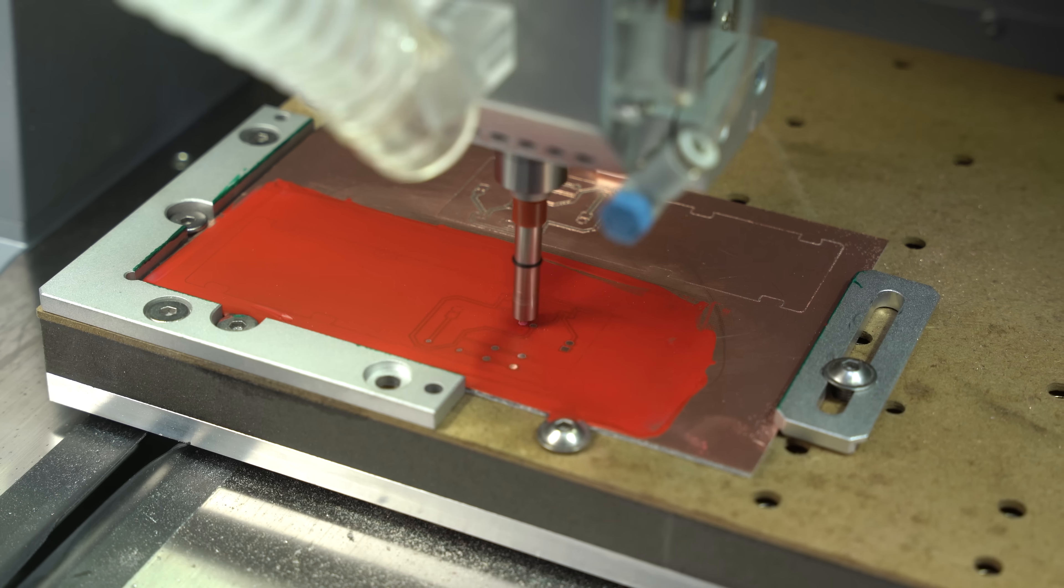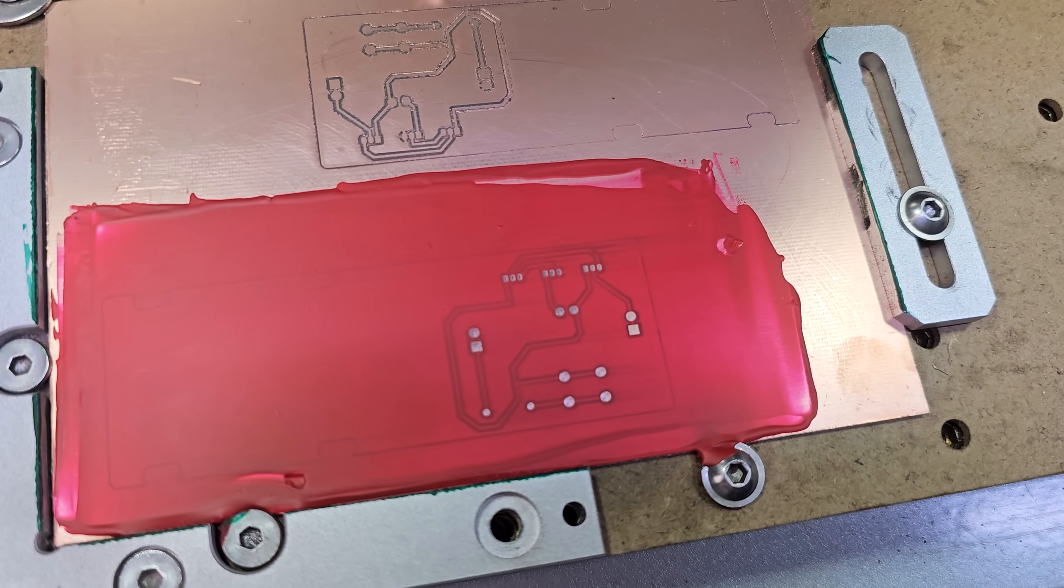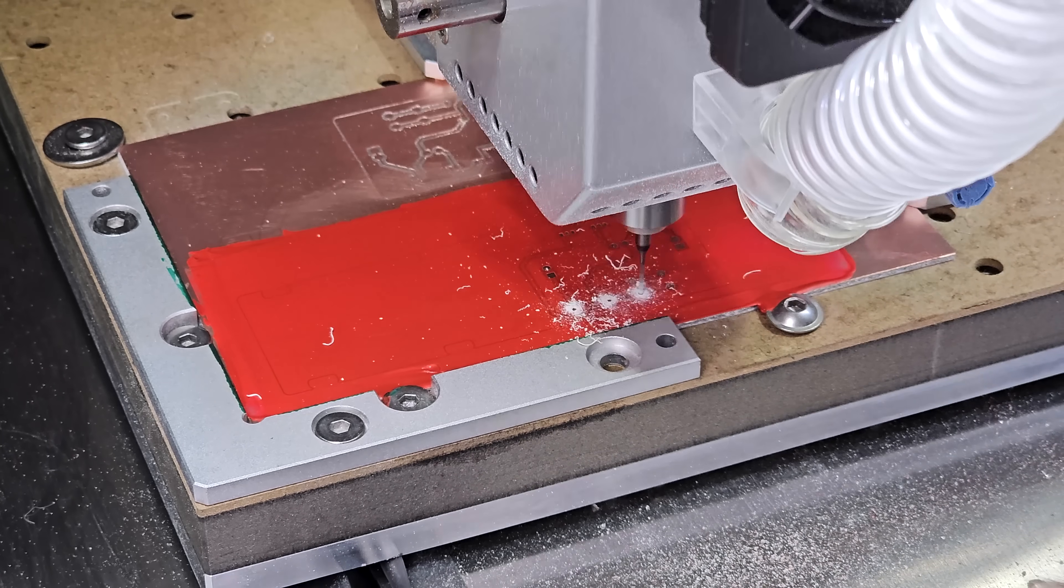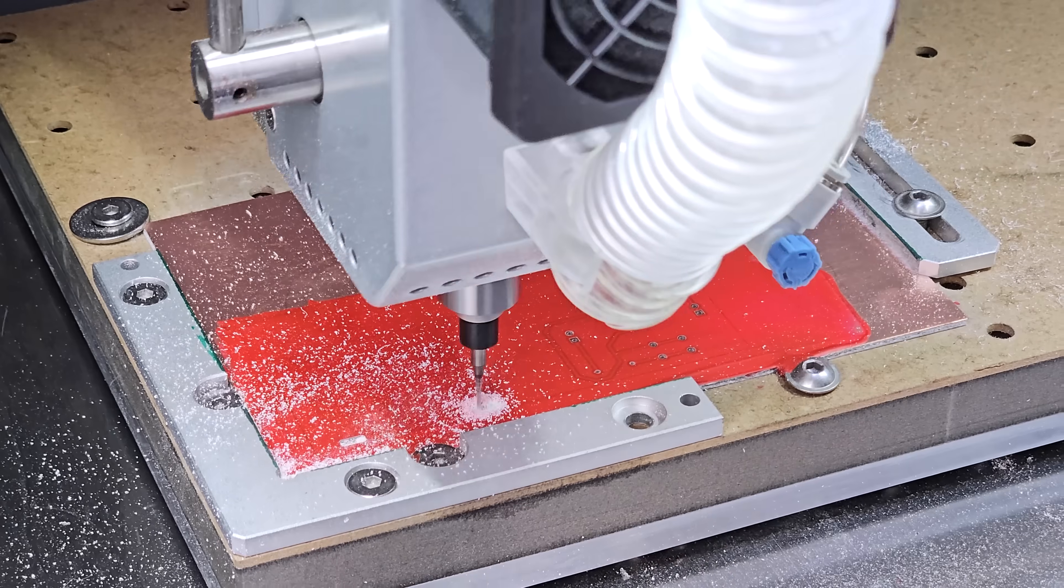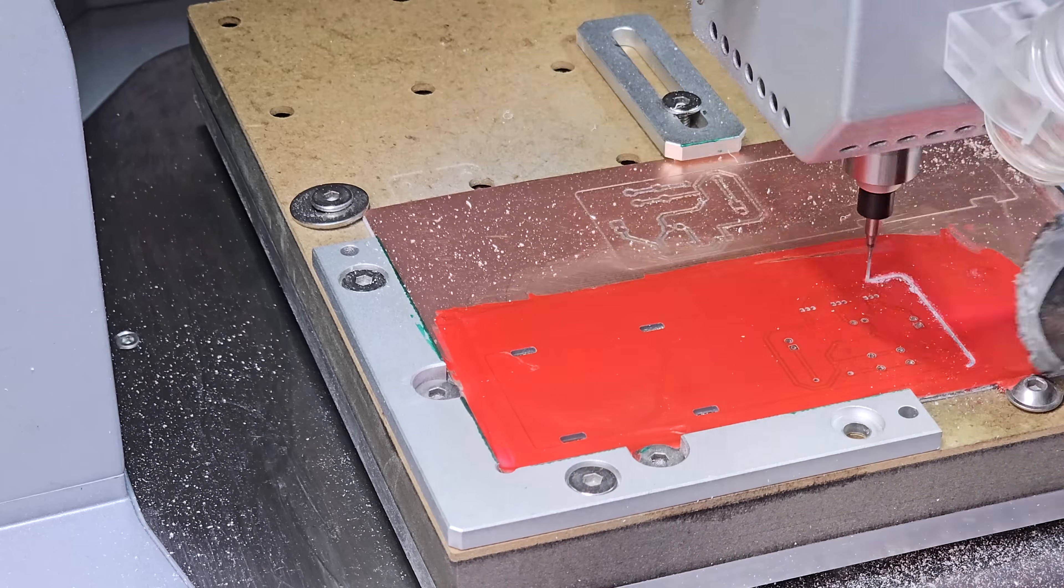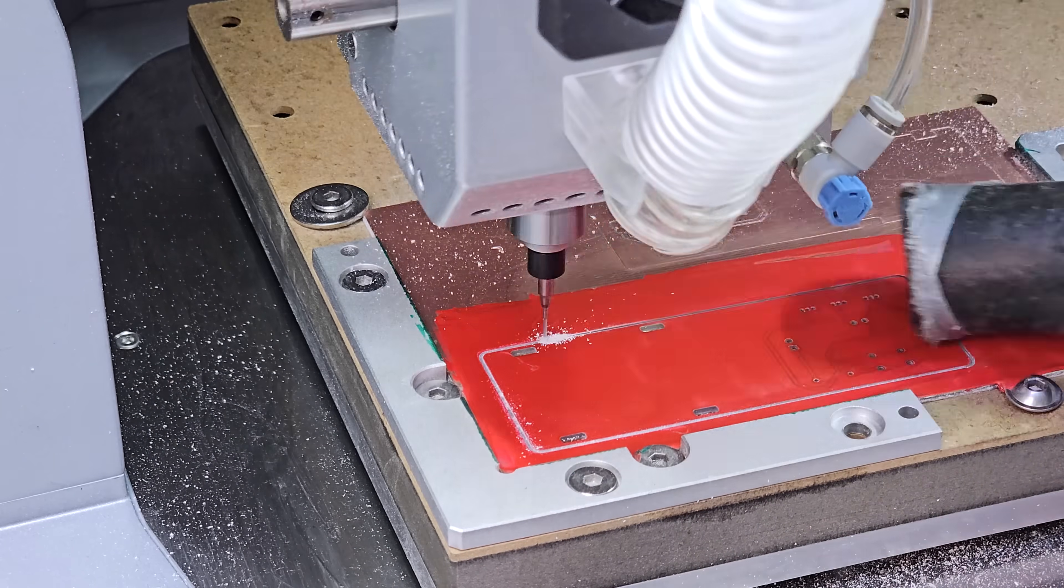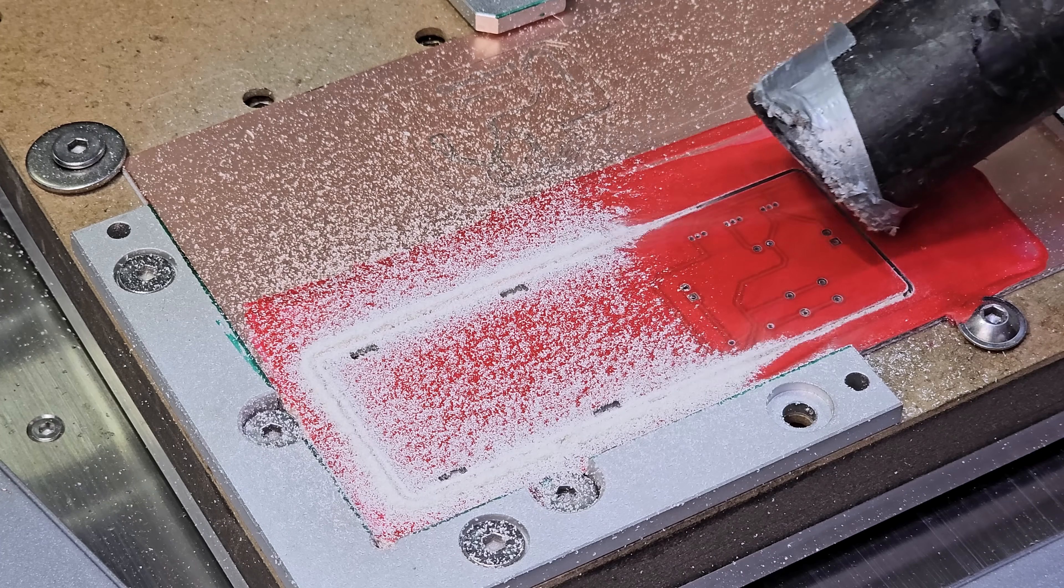I use a special engraving bit to remove the resin from the solder pads, so they're ready for soldering. Now it's time for the drilling phase, using a 0.8mm drill bit. Finally, I use a 0.8mm corn bit to mill the pockets and fully cut out the PCB, leaving small tabs to keep it anchored during the final cut.